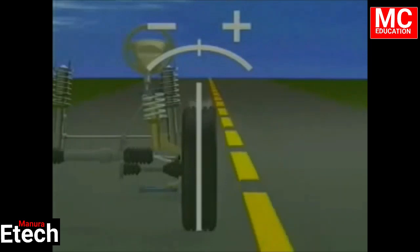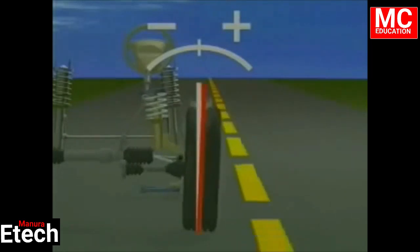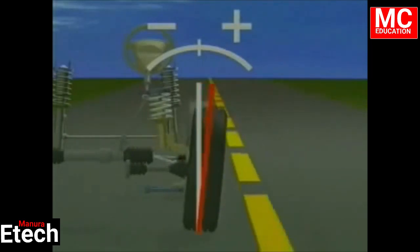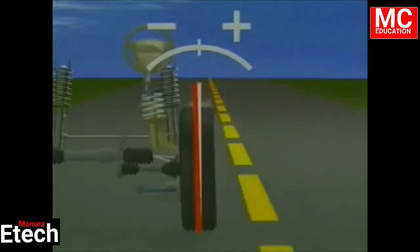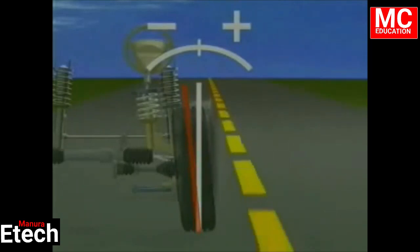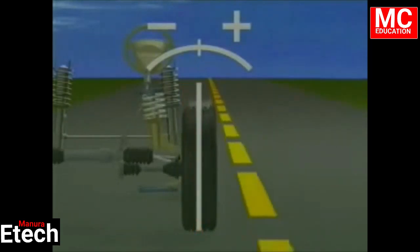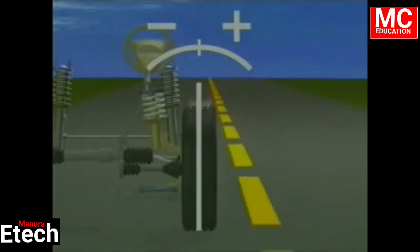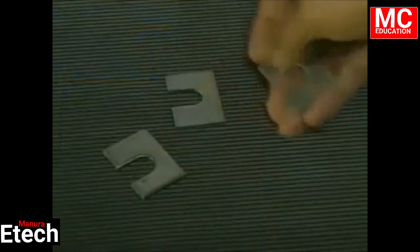When a wheel tilts outward at the top it has positive camber, and when a wheel is tilted inward at the top it has negative camber. A slight amount of negative camber is normal since the top of the tires will move out with speed. Where camber is adjustable, it is usually adjusted using shims or cams.